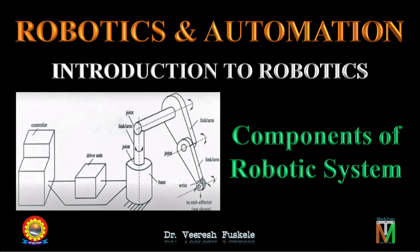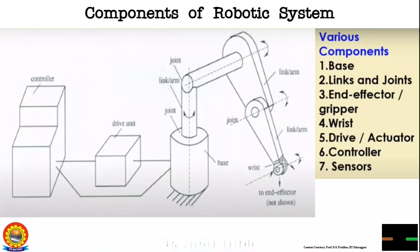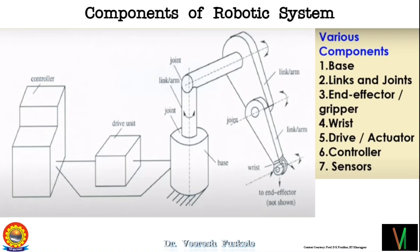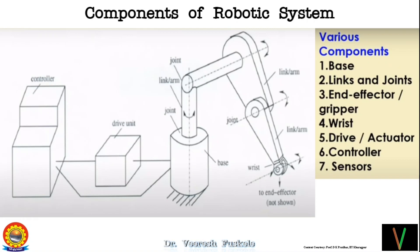Today we will start a discussion on the components of various robotic systems. The figure depicts one type of industrial robot, known as a manipulator. A manipulator is a robot whose base is fixed, as you can see here. If the base is fixed, the robot is known as a manipulator, and these are generally employed in industries.